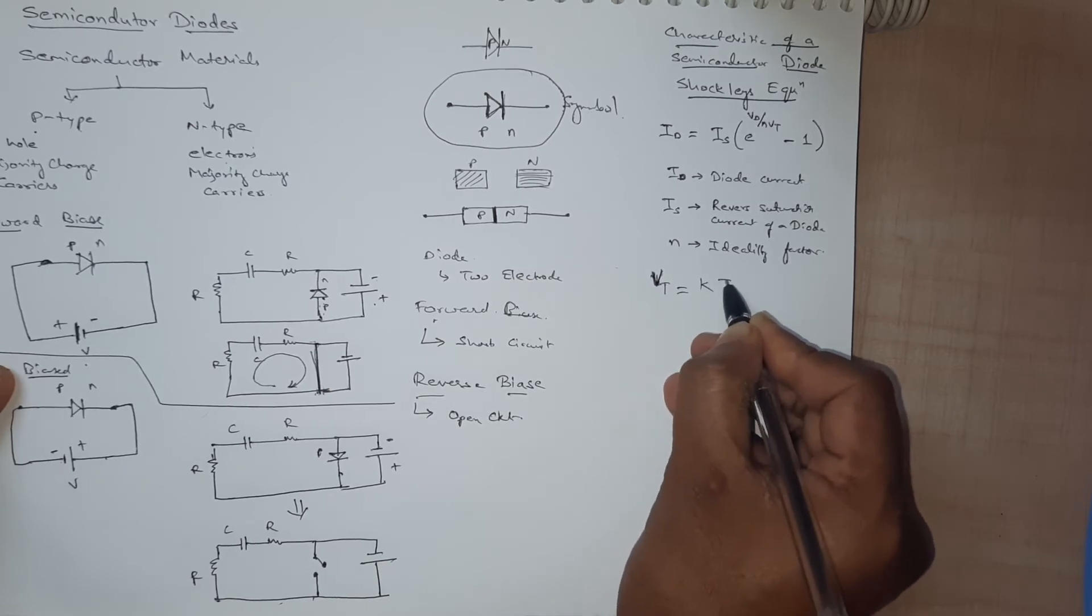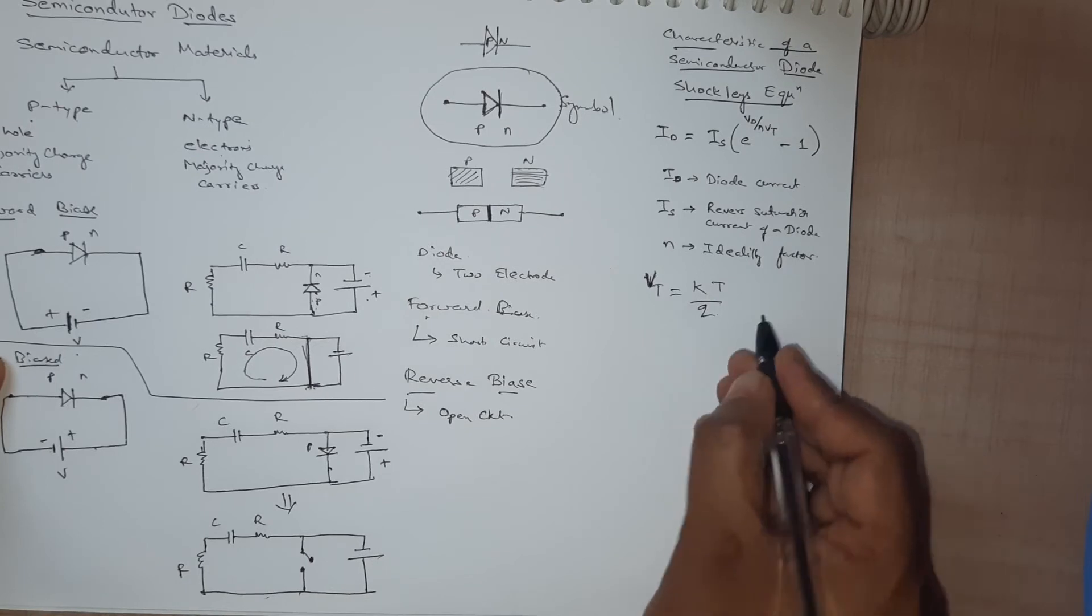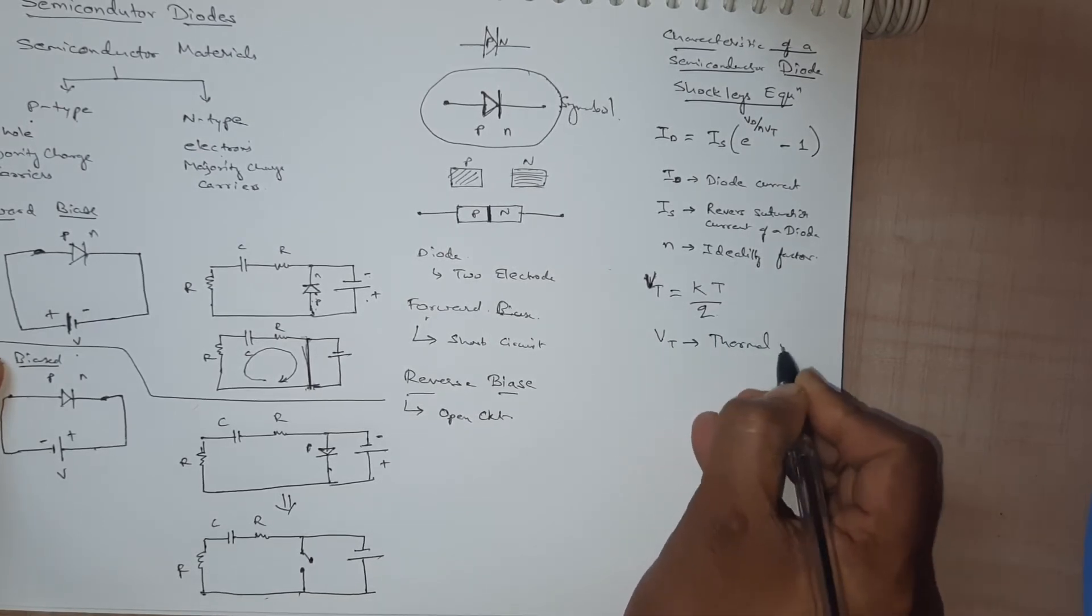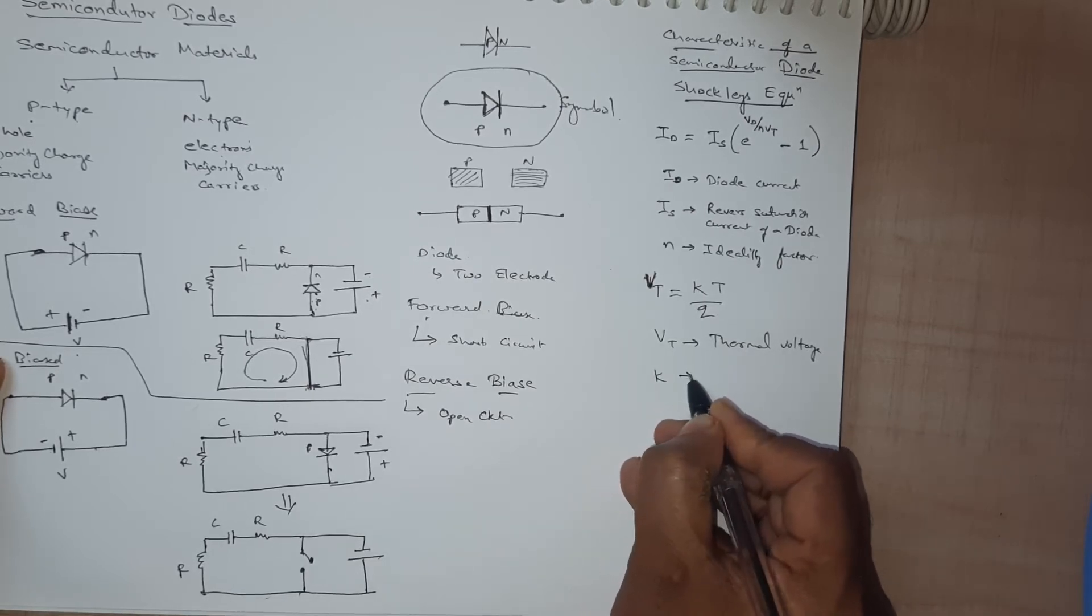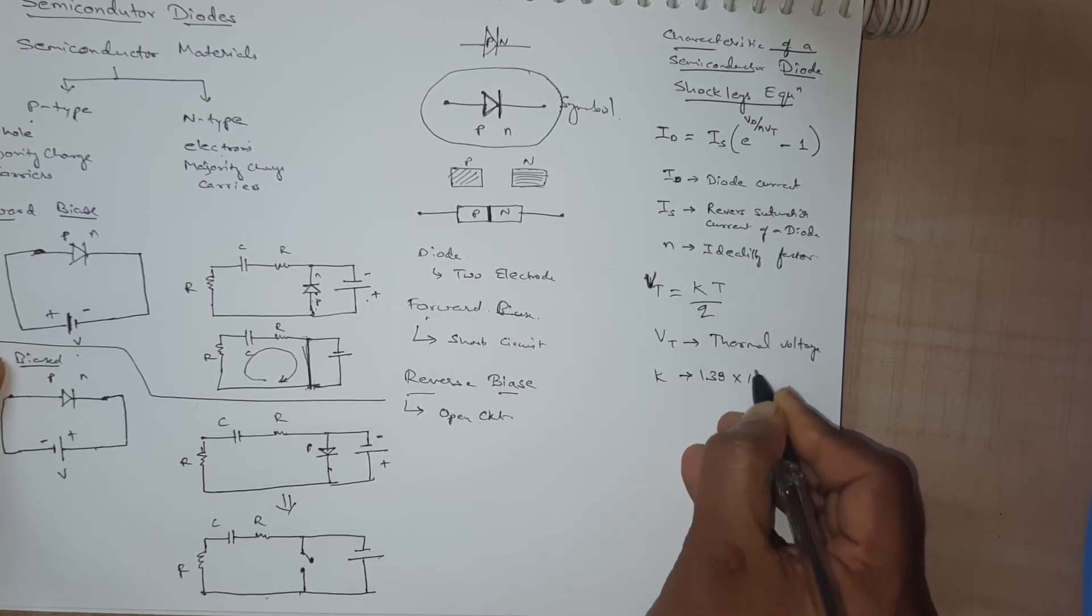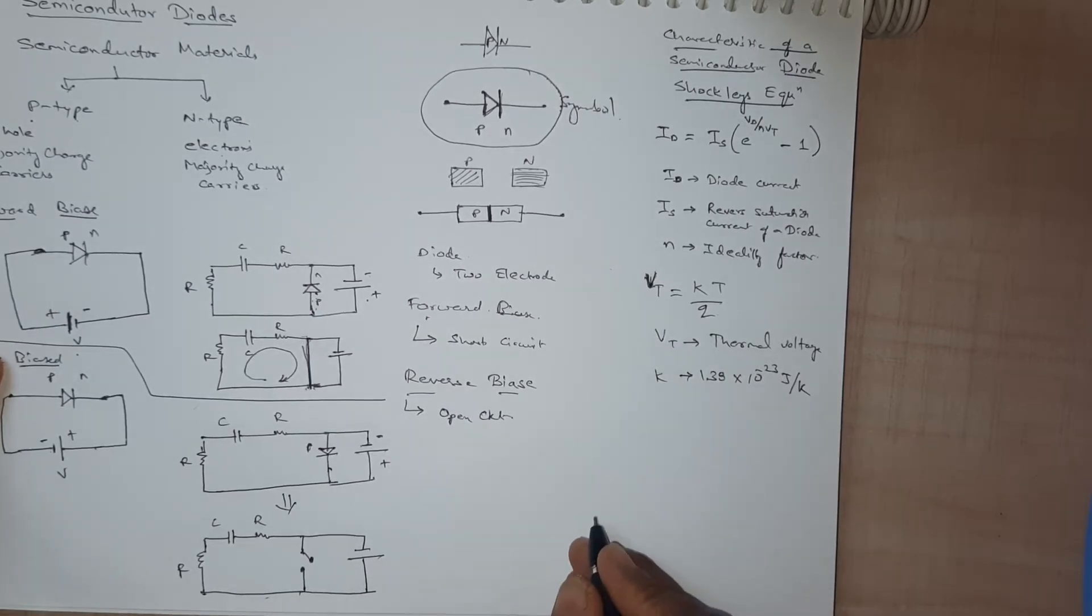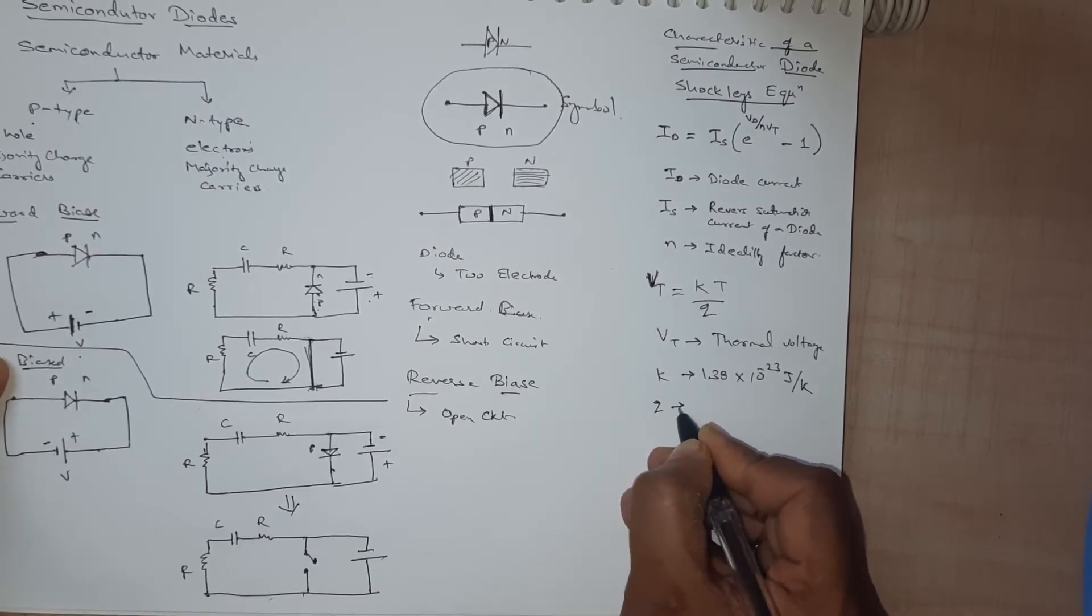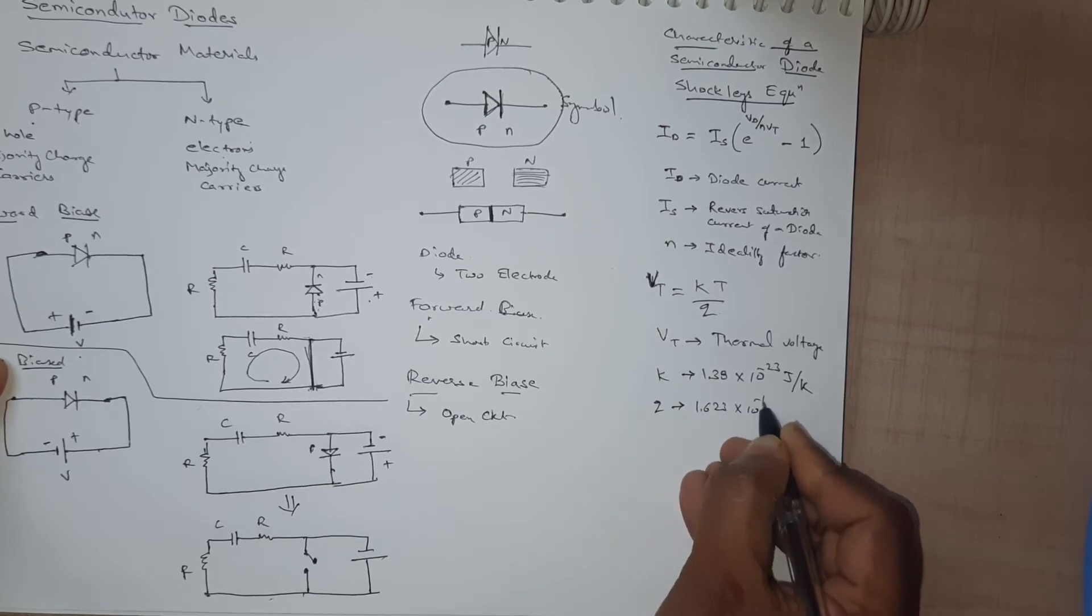And here vt can be given by kt divided by q where vt is known as thermal voltage. K is known as Boltzmann constant that is 1.38 into 10 to power minus 23 joules per kelvin, and q is the charge of electron that is 1.623 into 10 to power minus 19 coulombs.